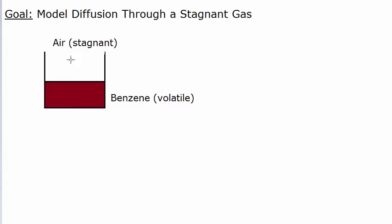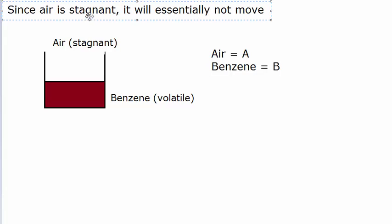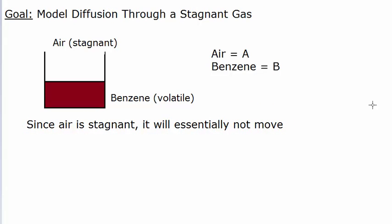So benzene can essentially evaporate upwards at this interface and disappear. The air is stagnant, and we'll talk about the ramifications of that momentarily. We're going to call the air species A and the benzene species B. Since the air is stagnant, it essentially won't move while the benzene evaporates.